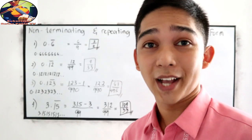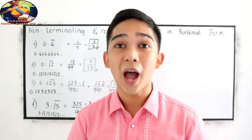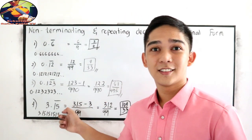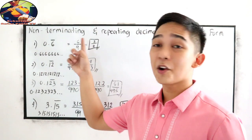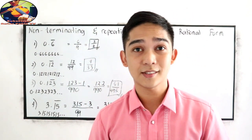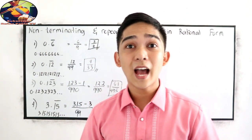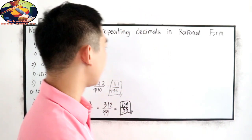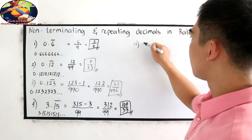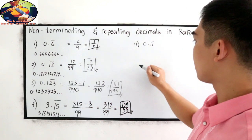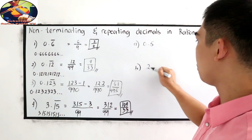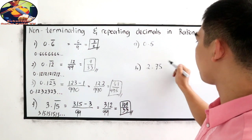That is how to write non-terminating and repeating decimals into rational numbers. Now I want you to answer the following: Letter A, 0.5 bar. Letter B, 2.75 bar.